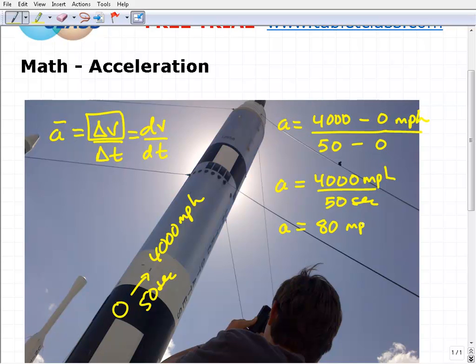Let's quickly think about what this means. Acceleration, if you think about it, is how fast something is increasing in speed, or it could be the reverse too—how fast something is slowing down. What we're saying here is every second this rocket is picking up an additional 80 miles per hour.